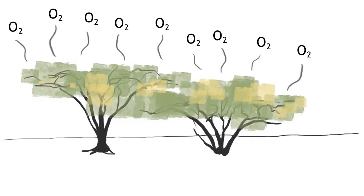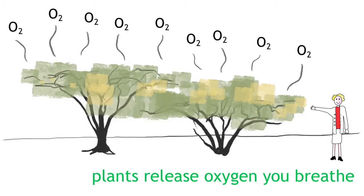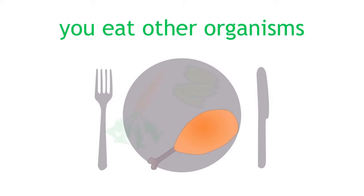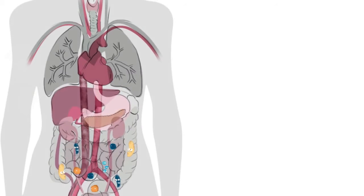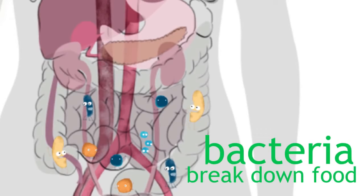You breathe oxygen that's been released into the air by photosynthesizing plants. You eat animals, plants, and even fungi as nourishment for your body. And once that food is in your body, bacteria that live inside of you break it down so your body can use it.